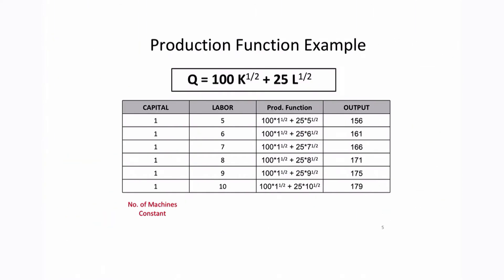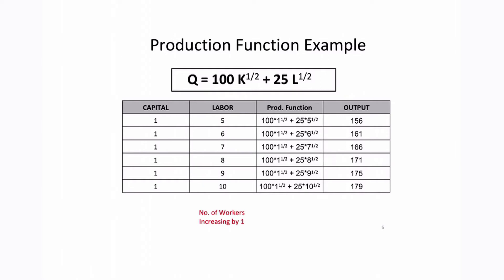Let's look at this example. Let's assume that the number of machines stays constant — this firm is only using one machine for production. But we are varying the amount of workers. We start off with five workers and increase the number of workers by one, going from five workers all the way up to ten workers, to see what impact this has on our output.